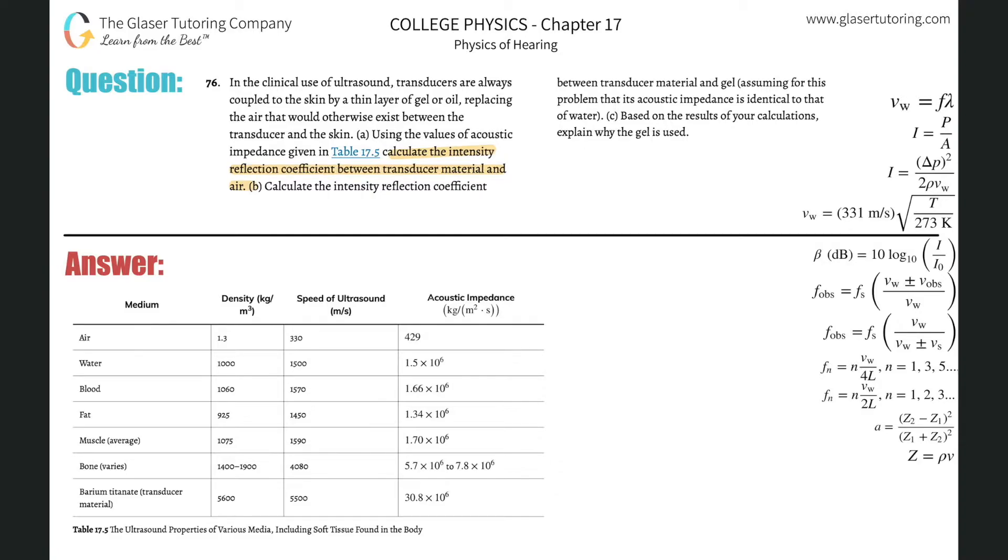So the intensity reflection coefficient is alpha over here in the formula, or A. I've seen it both ways. So A will be equal to the acoustic impedance of one value minus the acoustic impedance of another value, divided by the acoustic impedance of that second material plus that of the first material. And these are both squared, okay? These are both squared terms.